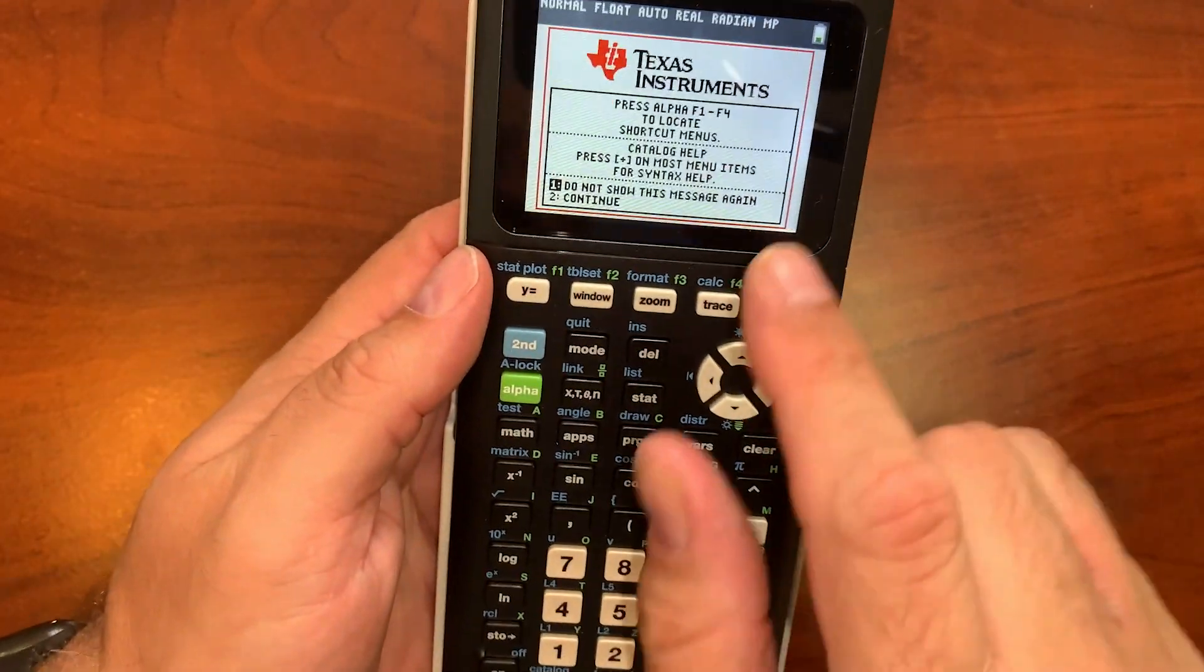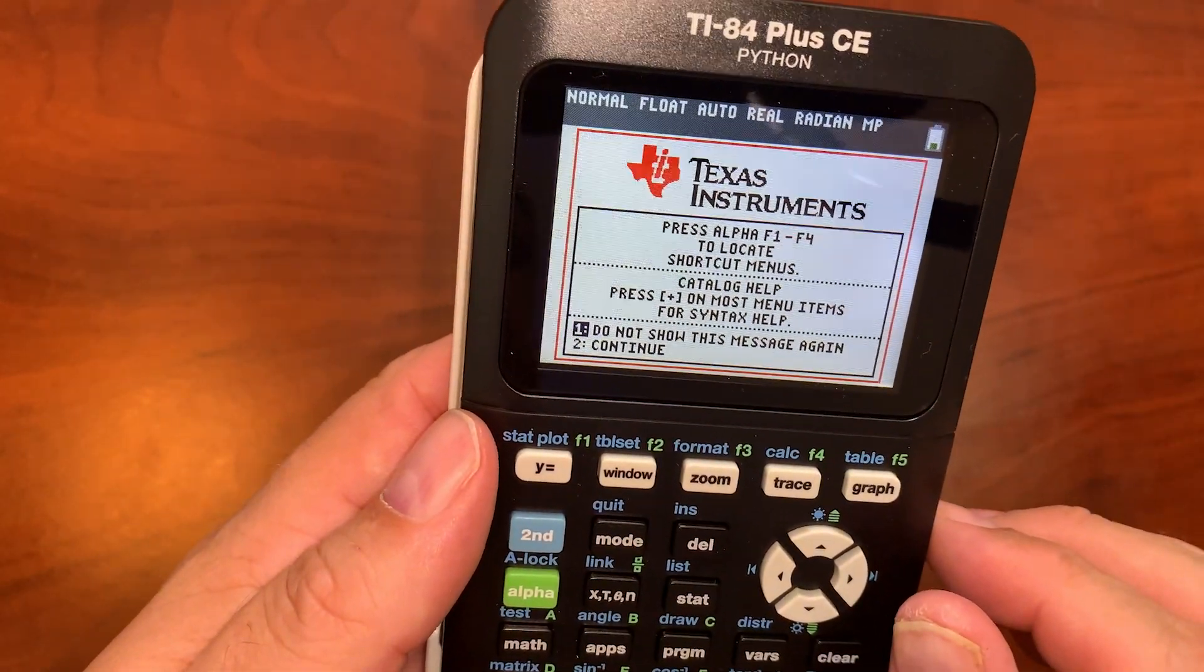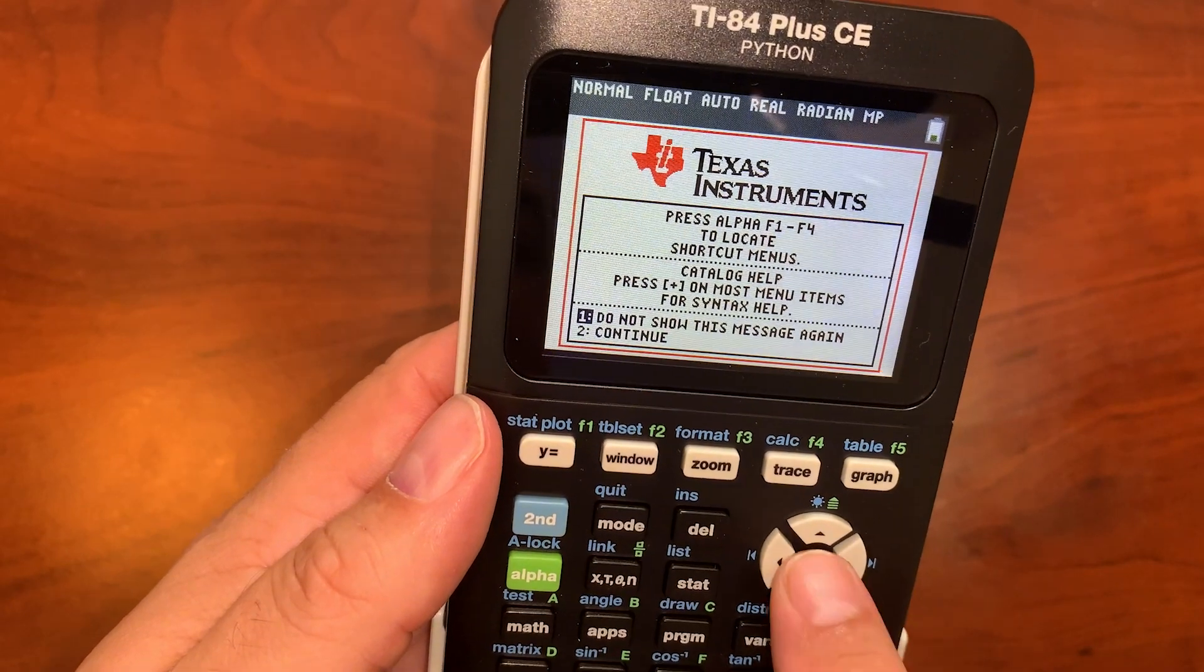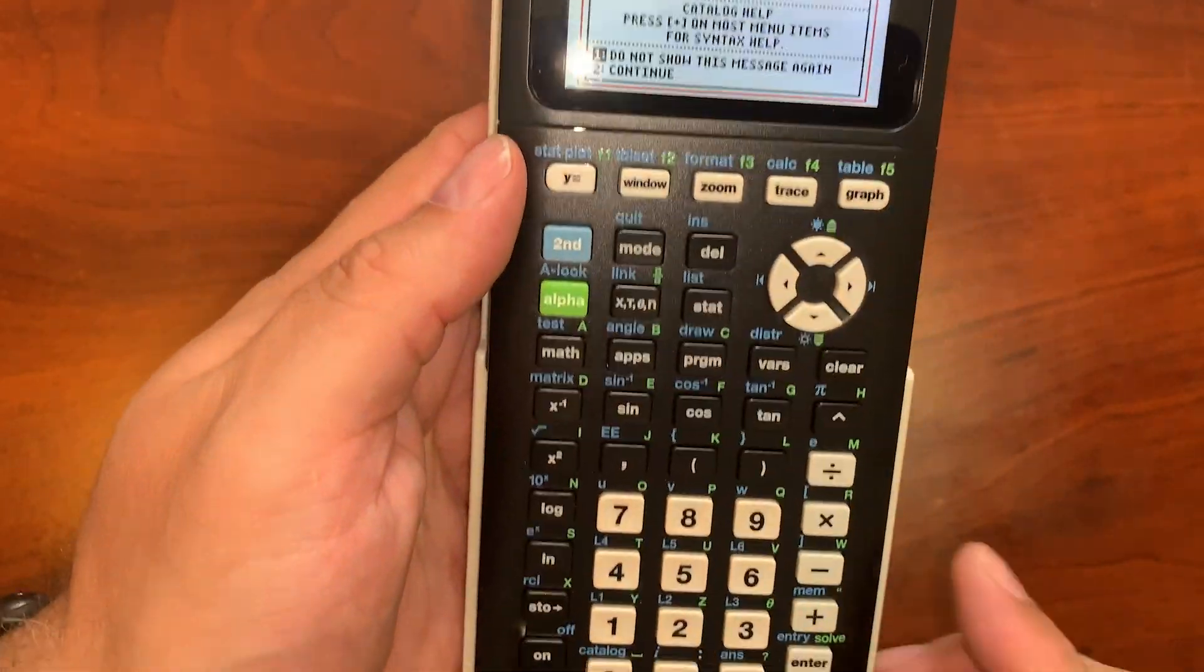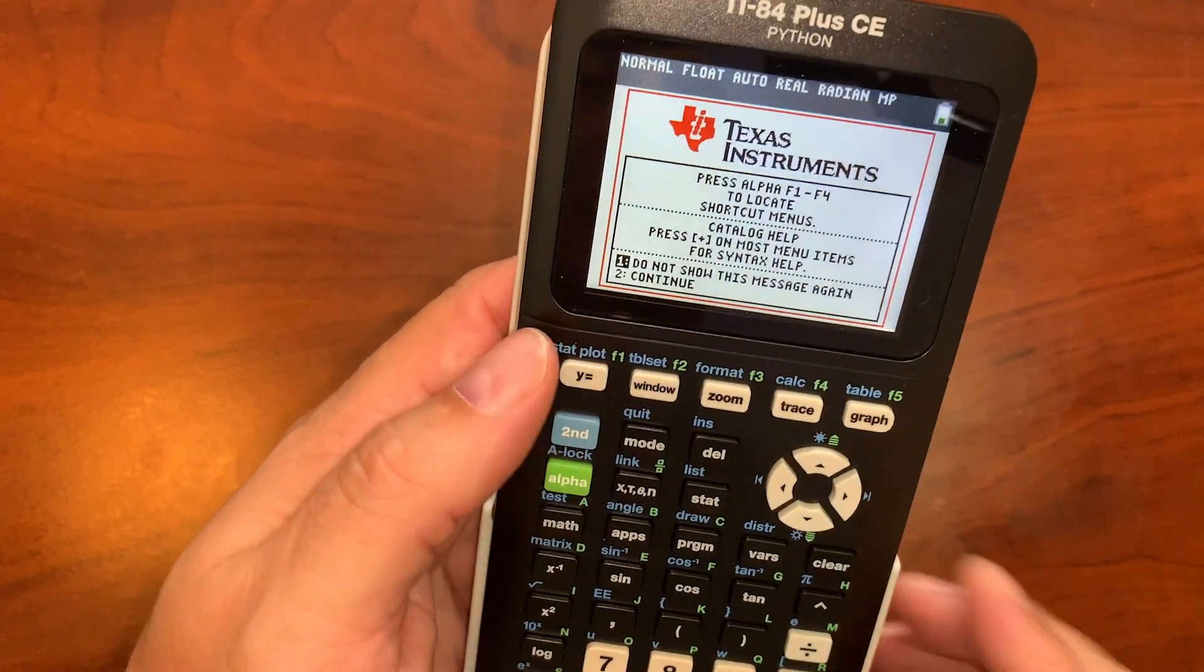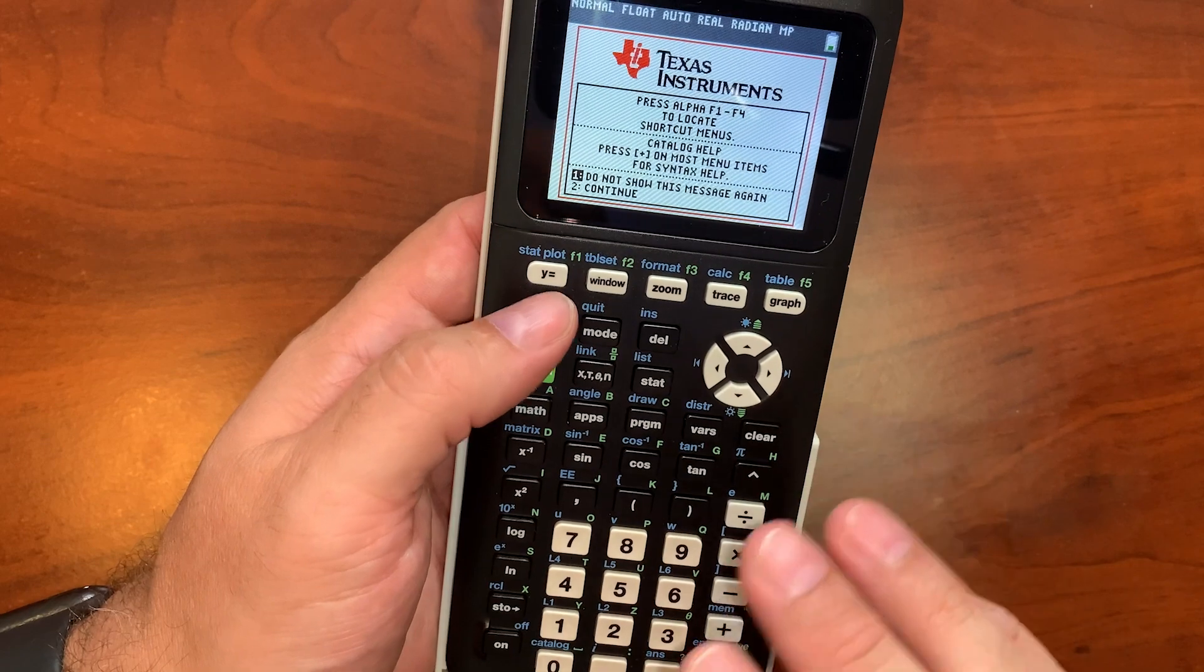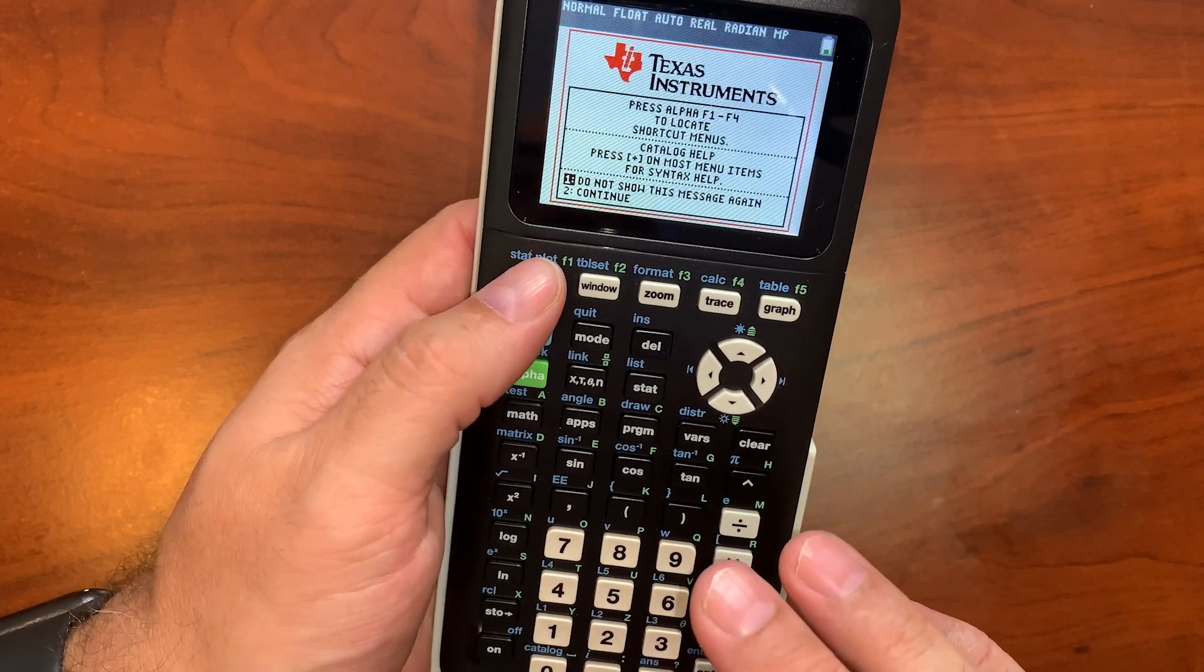The first thing you want to do is turn it on, and you get the welcome screen that'll show you all sorts of fun stuff. You can also choose to not show that ever again if you wanted to, but you could use it as a basic calculator or what most people get it for is to do graphing functions for algebra, calculus, stuff like that.